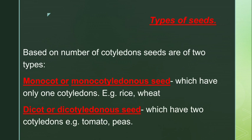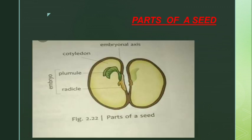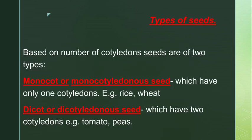The last topic for today is types of seeds. Based on number of cotyledons, seeds are of two types. Monocot or monocotyledonous seeds have only one cotyledon — examples are rice and wheat. Dicot or dicotyledonous seeds have two cotyledons — examples are tomato and peas. If a seed has two cotyledons it is a dicot seed; if it has only one cotyledon, it is a monocot seed.